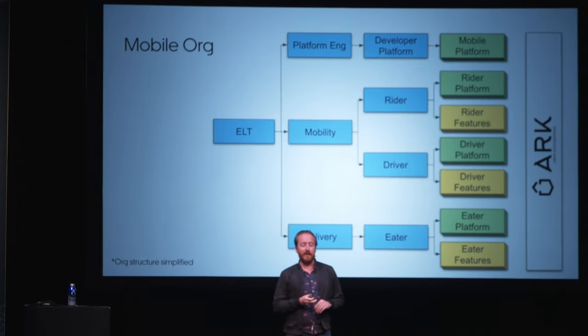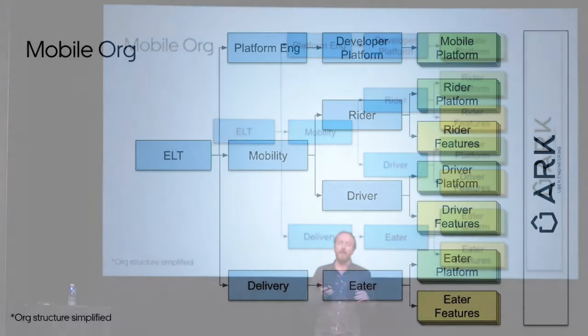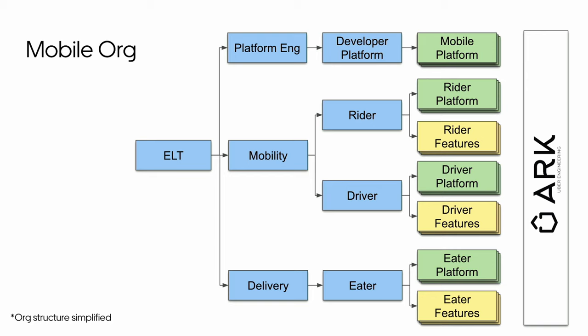Here's a simplified view of our org chart. Reporting up to our execs, we have multiple big orgs. I sit under platform engineering, which has all of infrastructure — compute, storage, and everything else — as well as developer platform, which is an org of about 200 people focused entirely on building our DevX, frameworks, code review, and everything else. Under that, a sub-org called mobile platform is what I lead — about 30 engineers total in Android and iOS. The mobility org has Rider and Driver with their platform teams, as well as a ton of feature teams. And then a delivery org, plus other orgs like Safety and Freight.